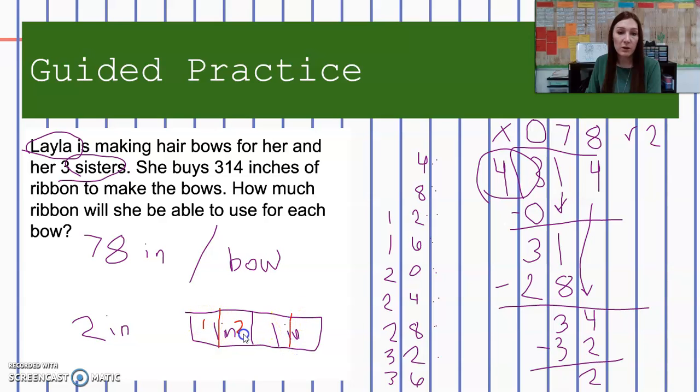So really, Layla is going to be able to use 78 and one half inches per bow. She's going to be able to use all of that ribbon to make bows.